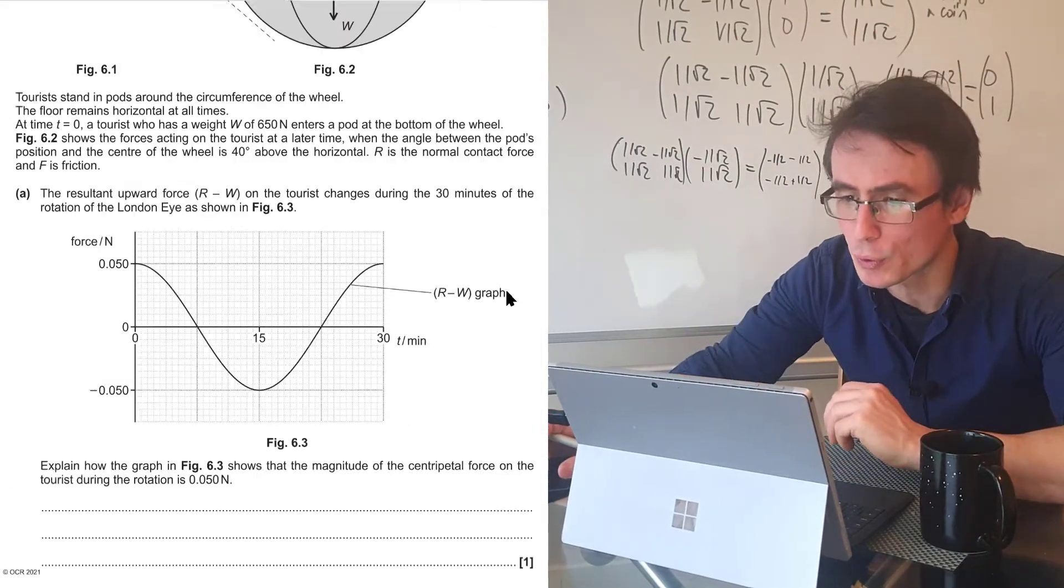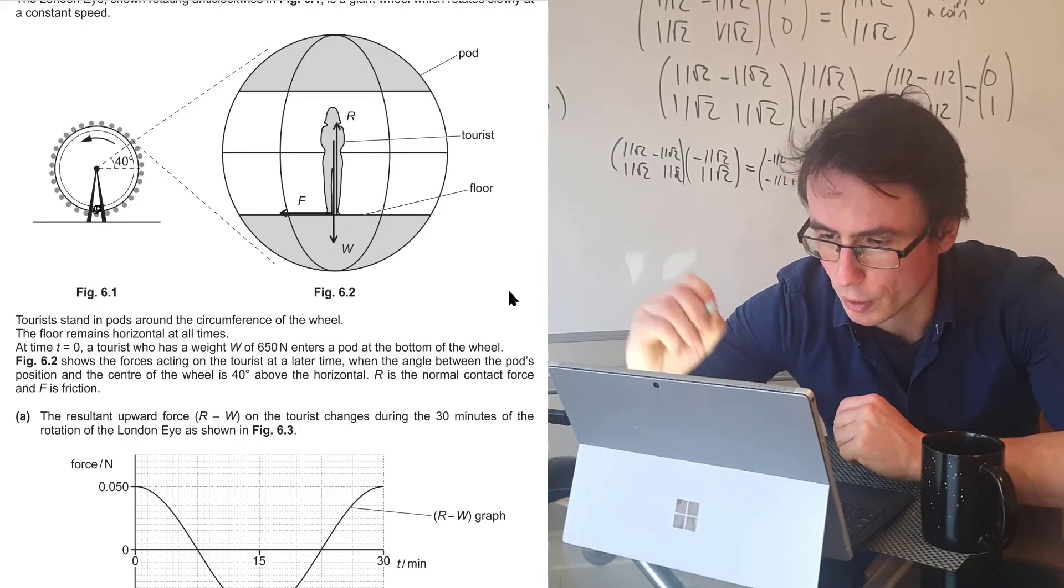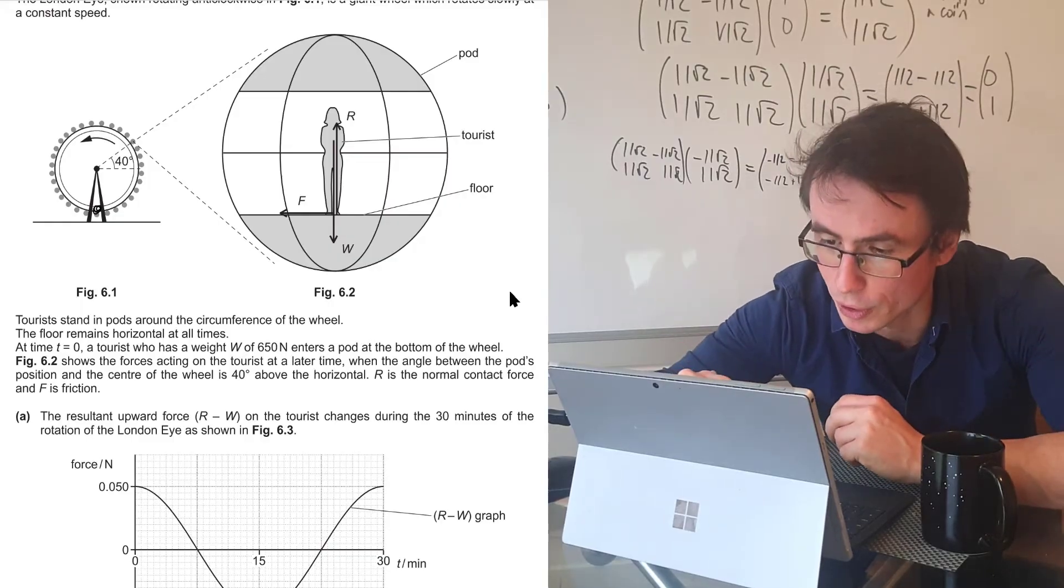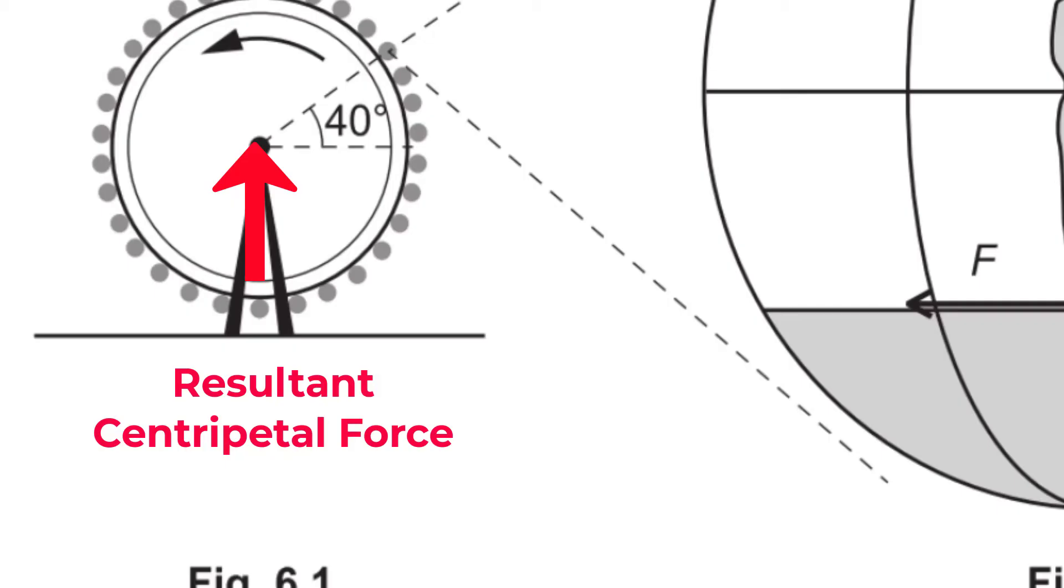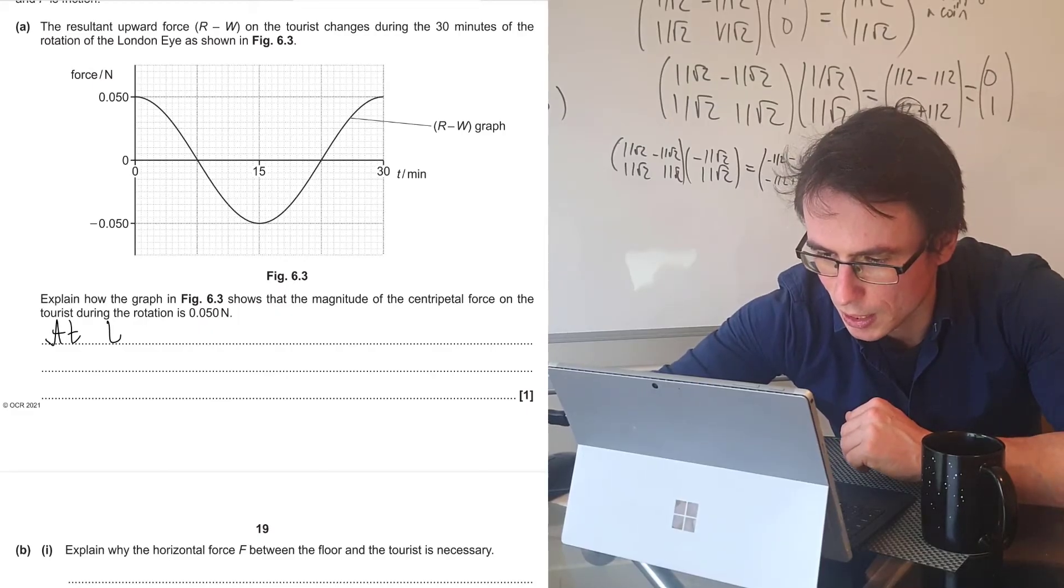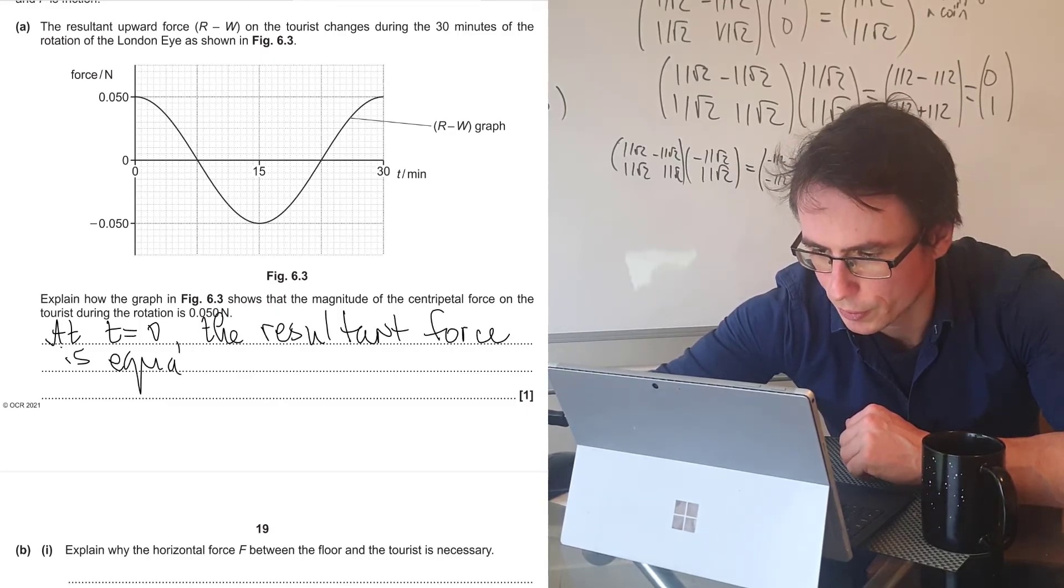First of all, at time t equals zero, the tourist will be right across here. Now, there will only be vertical forces acting on the tourist. At time t equals zero, the resultant force will be purely upwards, and this will be equal to the centripetal force. So we can say that at t equals zero, the resultant force is equal to the centripetal force.